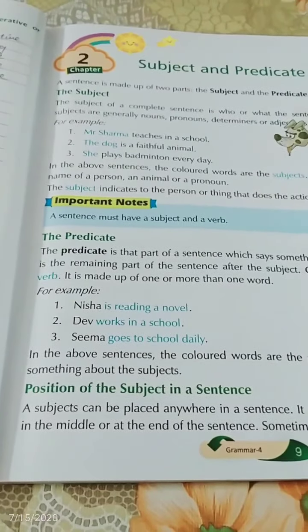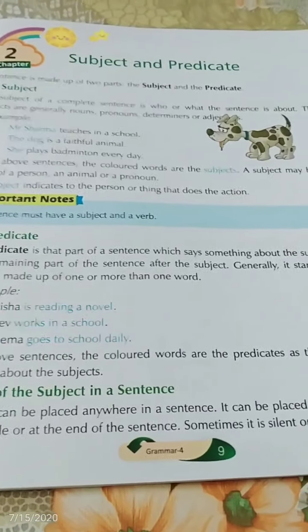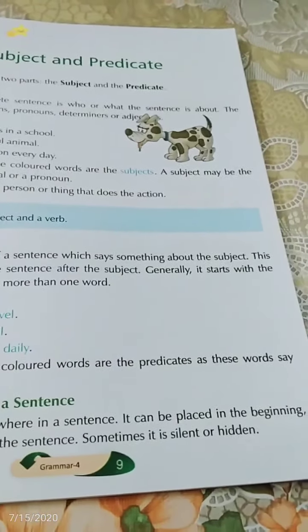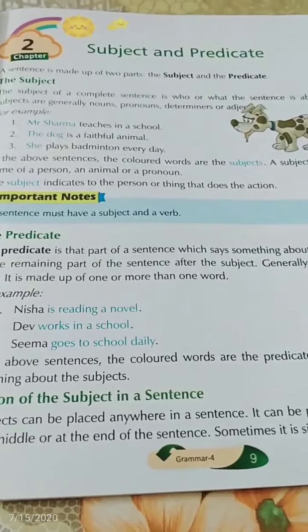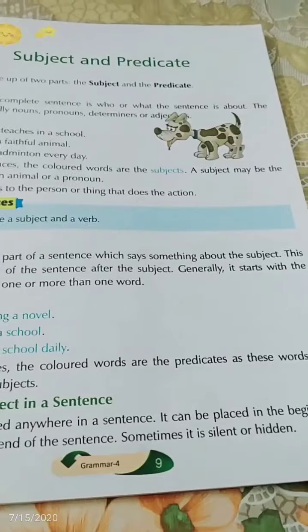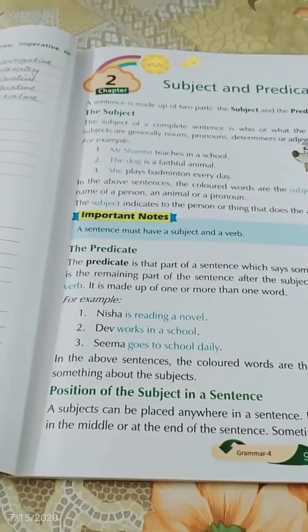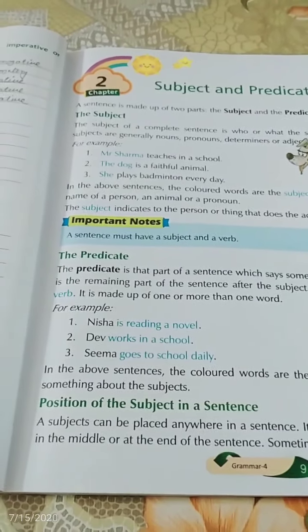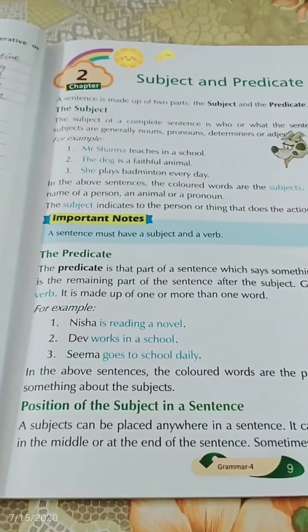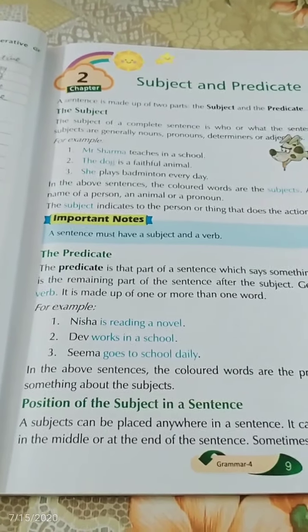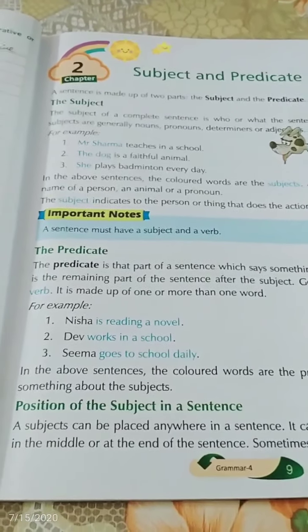Now we will read about the position of the subject in a sentence. A subject can be placed anywhere in a sentence — it can be placed in the beginning, in the middle, or at the end. Sometimes it is silent or hidden. When we write a complete sentence, it is not necessary to start or end with the subject.